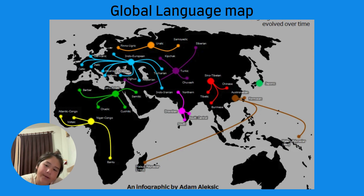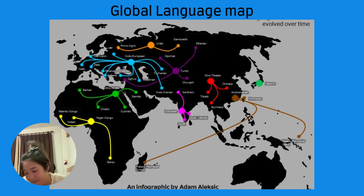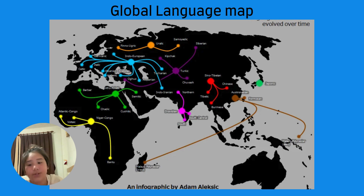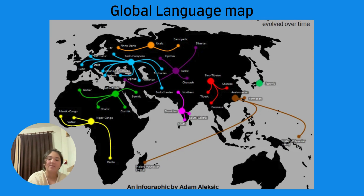Nowadays Spanish is the official language of 20 countries, and they all argue about how to pronounce the word for strawberry — 'fresa,' 'presa,' or 'frutilla.' The debate rages on.